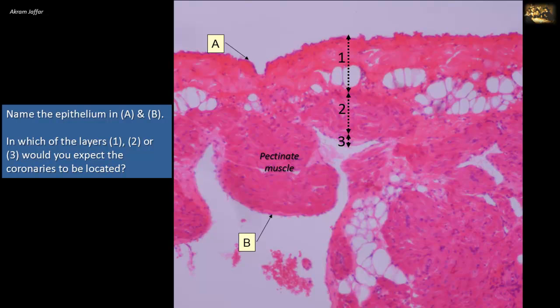Name the epithelium in A and B. In which of the layers — 1, 2, or 3 — would you expect the coronaries to be located? Given the pectinate muscle, this is the atrial wall. In the heart, which was originally a dilated blood vessel, the wall — whether of the atrium or the ventricle — has three layers that correspond to the three tunicae of a blood vessel.